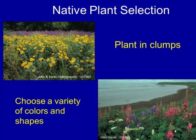You want to choose a variety of colors and shapes if you're trying to attract lots of different types of pollinators. You also want to plant in clumps — it's more attractive to pollinators because they don't have to go as far between stops to get nectar. It's also better for the plants because your pollinator is more likely to hit something of the same species as it goes from one plant to the other.